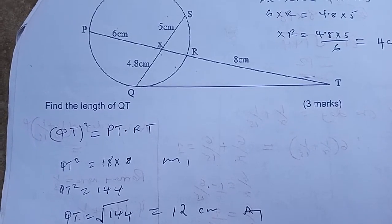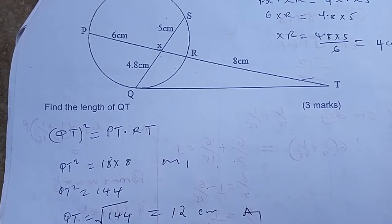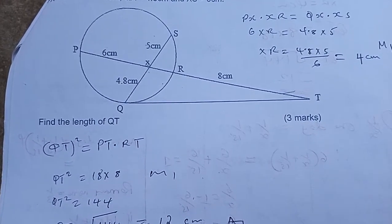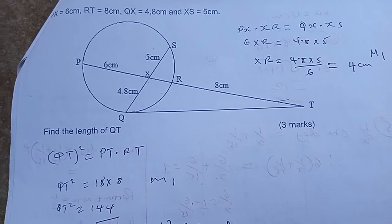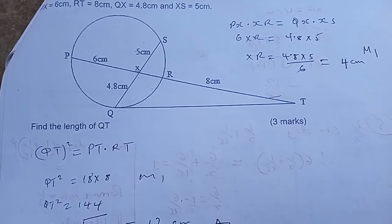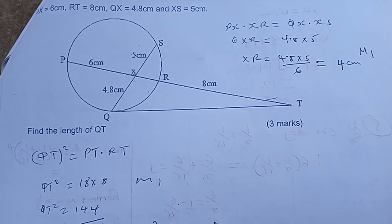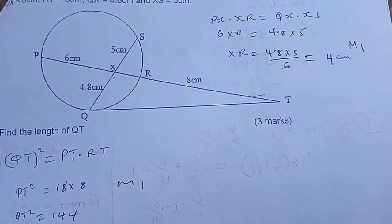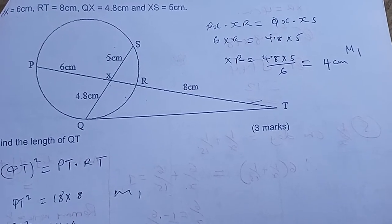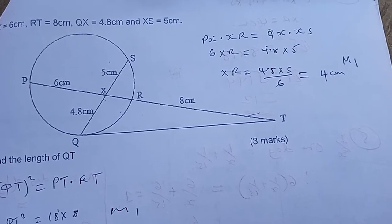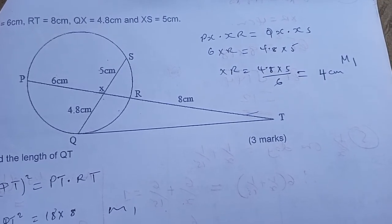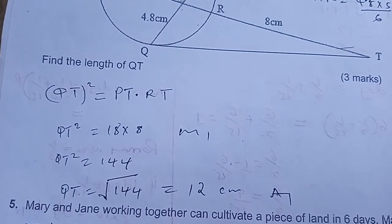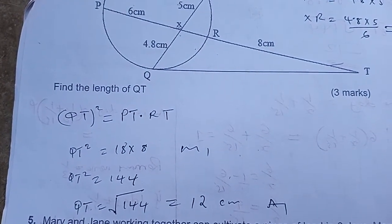Now, PT is 6 plus 4, which is 10 plus 8, which is 18. So it's going to be 18, and RT is 8, so 18 times 8.